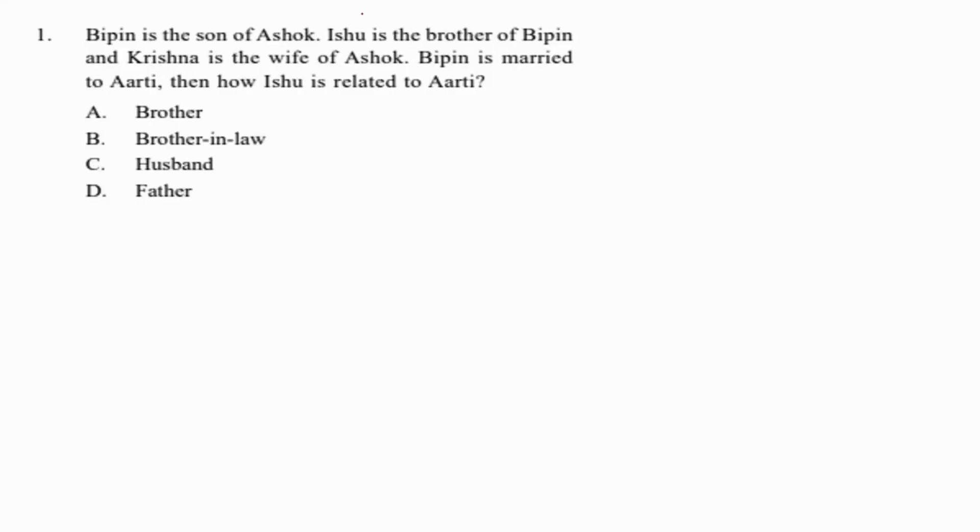The first question reads: Bippin is the son of Ashok, Ishu is the brother of Bippin, and Krishna is the wife of Ashok. Let's draw a diagrammatic representation. Ashok is the father of Bippin. Ishu is brother to Bippin, so Ashok is father to both. Krishna is the wife of Ashok, so Krishna is their mother. Ashok and Krishna are husband and wife, parents to two children Bippin and Ishu.